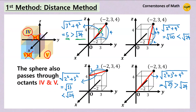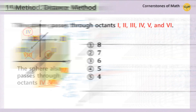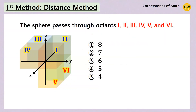Therefore, the sphere also passes through octants 4 and 5. In the end, the given sphere passes through these 6 octants: 1, 2, 3, 4, 5, and 6. Hence, the correct choice is choice 3.